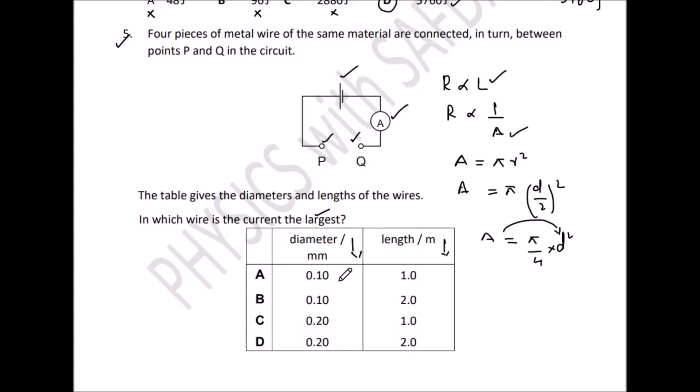Look at the option. In A, diameter is 0.10, length is 1.0 m. Second, diameter is 0.10 mm, length 2.0 m. C, diameter 0.20 mm, length 1.0 m. D, 0.20 mm diameter and 2.0 m length. We need a small length and large diameter for largest current. Look at the small length and large diameter. Option number C, 0.20 mm and length 1.0 m. Option C is the right answer here.